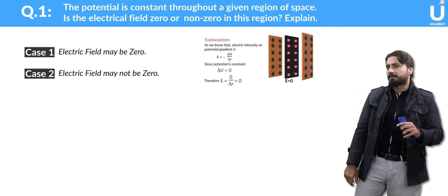The second question, 12.2, is: 'Suppose that you follow an electric field line due to a positive point charge. Do the electric field and potential increase or decrease?'